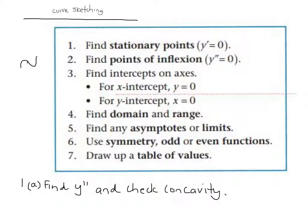Third point, find intercepts for the x-intercept and the y-intercept. You look at the domain and range, you check any asymptotes and limits. You can use symmetry if you know that it's symmetrical or odd or even, and you can even draw up a table of values, but that would probably be your last resort.